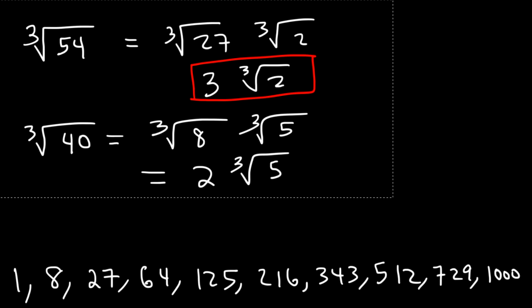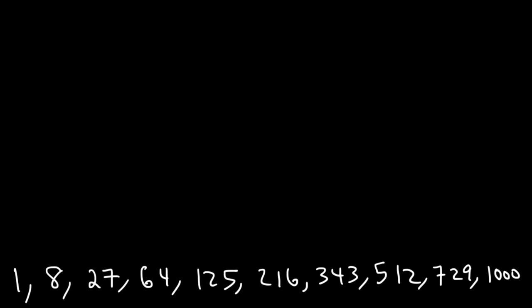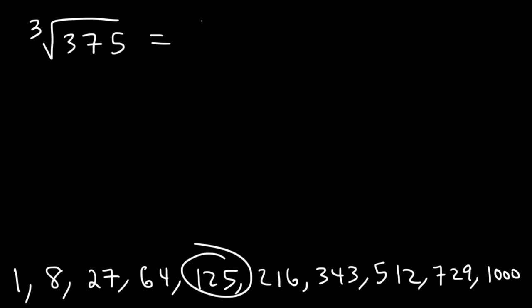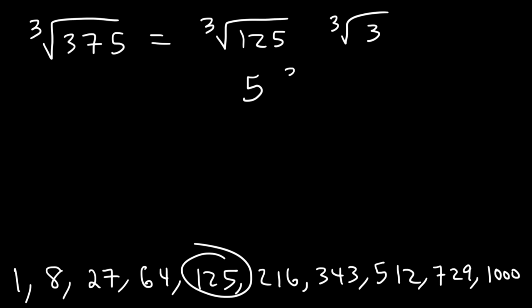Let's try one more: what is the cube root of 375? You can see that 125 goes into 375 — 375 divided by 125 is 3, and the cube root of 125 is 5. So the answer is 5 times the cube root of 3.